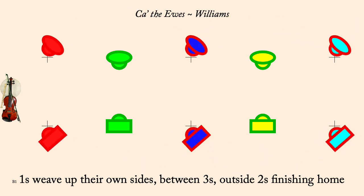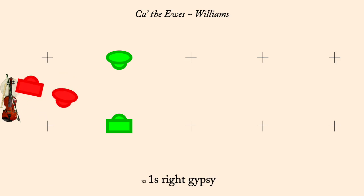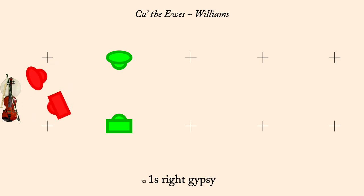One's right gypsy. One's lead down and back to second place. Twos move up.